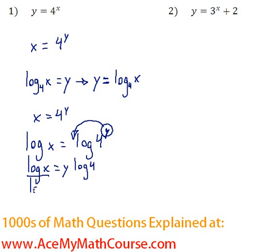And I can just basically divide both sides by log 4. So those cancel out. And y is just equal to log x over log 4.